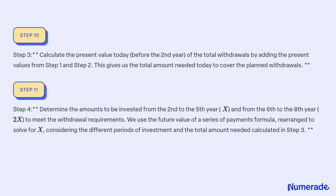Step 4: Determine the amounts to be invested from the 2nd to the 5th year (X) and from the 6th to the 8th year (2X) to meet the withdrawal requirement. We use the future value of a series of payments formula, rearranged to solve for X, considering the different periods of investment and the total amount needed calculated in Step 3.